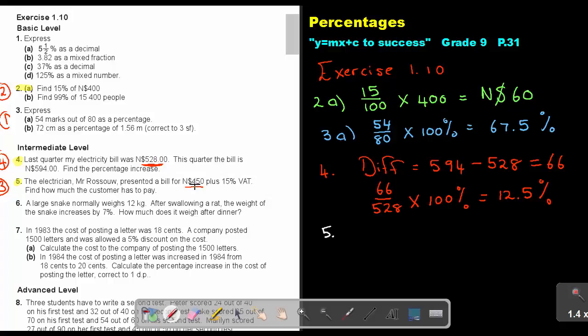And then the last one is number 5. The electrician presented a bill of this plus 15%. Find how much the customer must pay. Now let's do method 2 for a difference. So it's 100 plus 15%, that gives me 115%. And then it's 115 over 100 times the 450, and that will give me an amount of 517.50. So what must the customer pay? The customer will pay 517.50 Namibian dollars. And this is how you do different percentage sums.